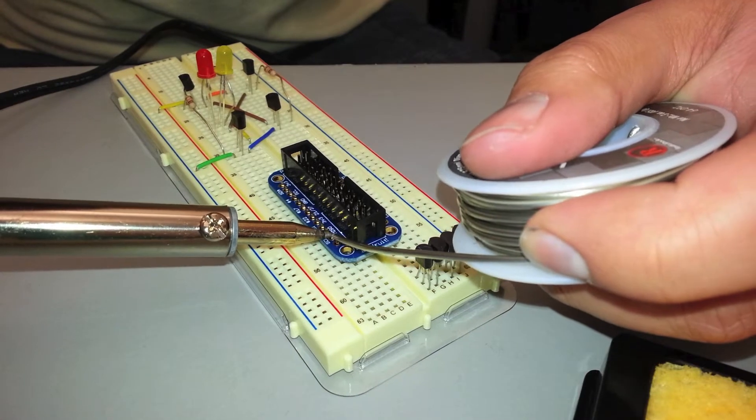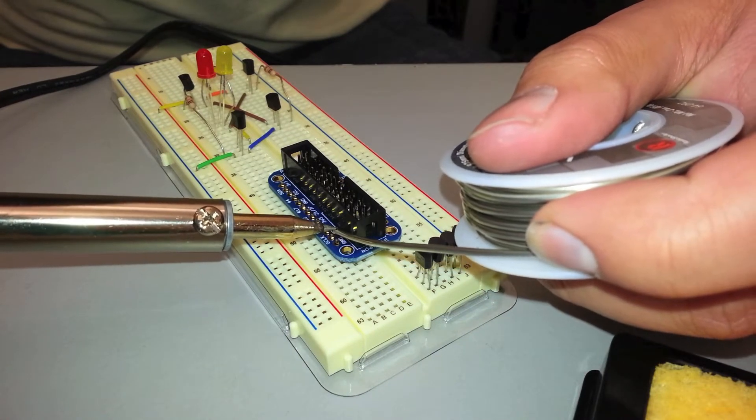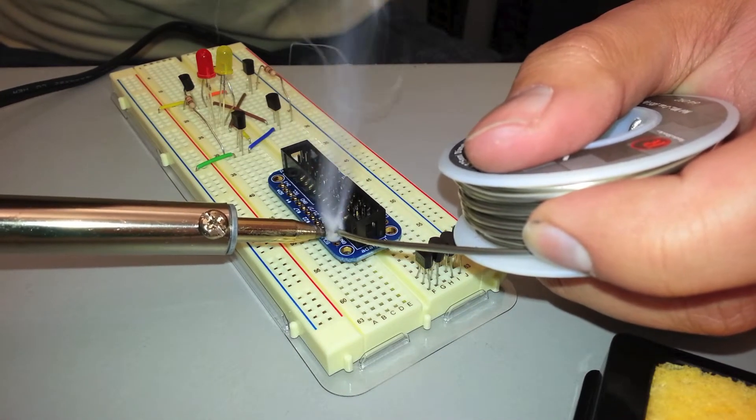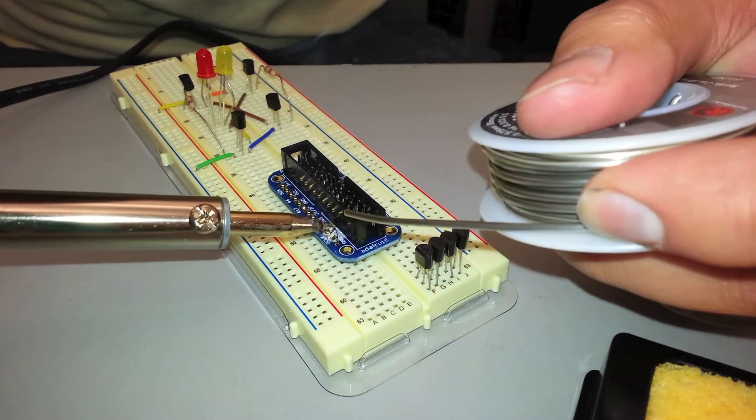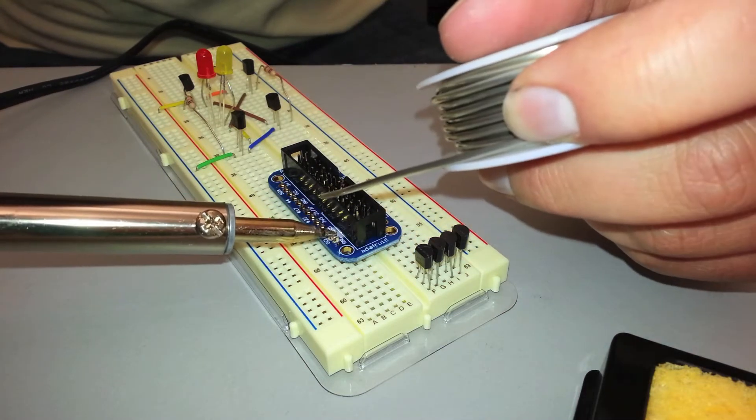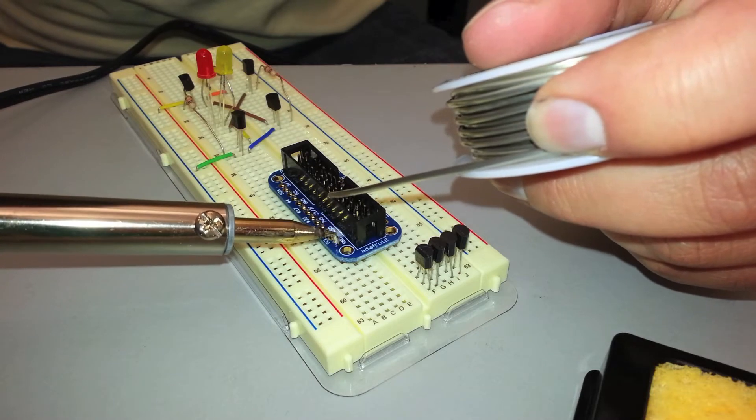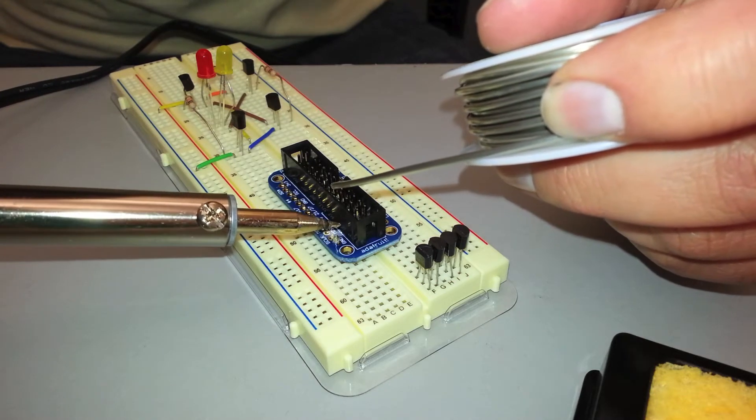And mine kind of end up looking like Hershey's Kisses, but that's okay, as long as the pins are not touching each other. Just put a drop just like that. And make sure you don't put too much because then you can melt the board.